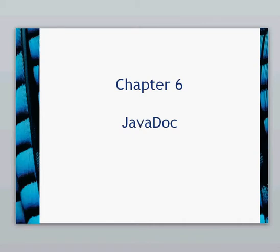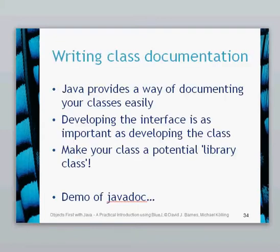Hello again. This is a chapter 6 video and we're looking at Javadoc. This section is all about looking at documentation for your code and specific class documentation. Java provides a really easy method for you to do this — you can do it inline with writing your code so you don't have to do it all separately. When we're doing this, we need to develop it because ultimately the interface — what people can see about the particular class — is the important bit.